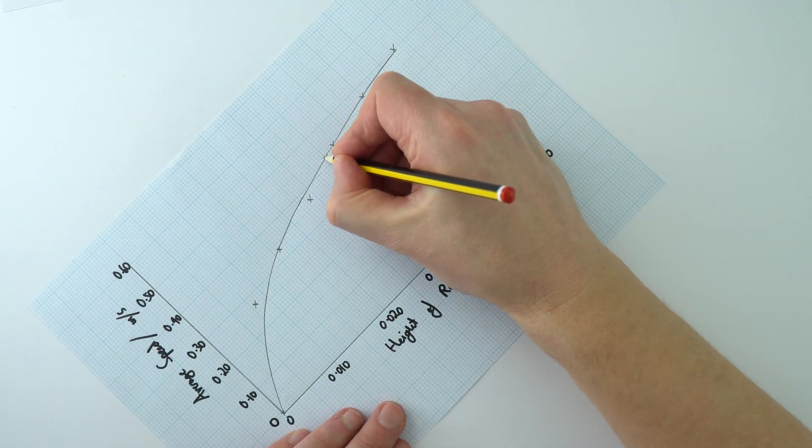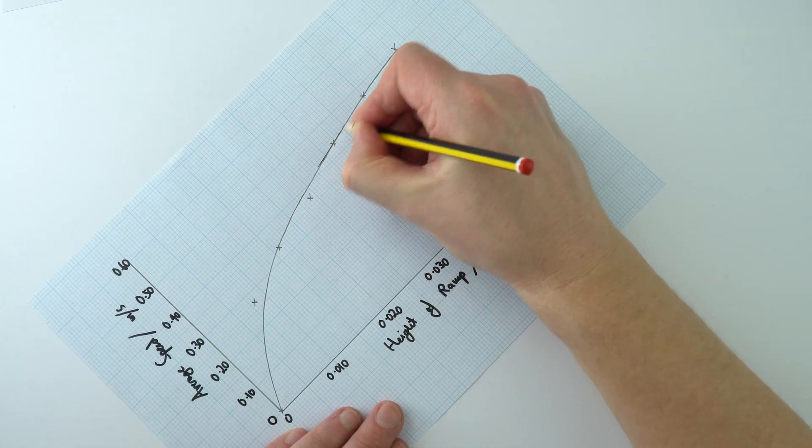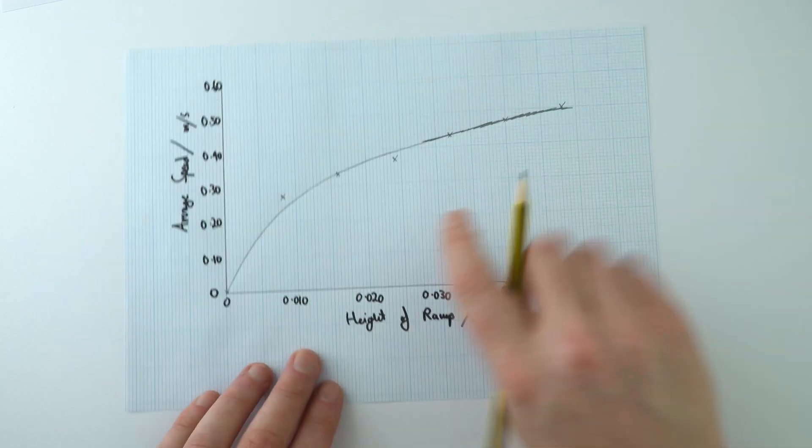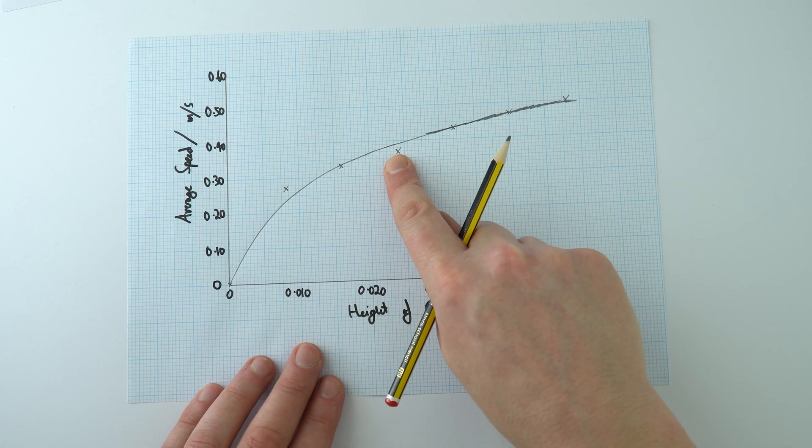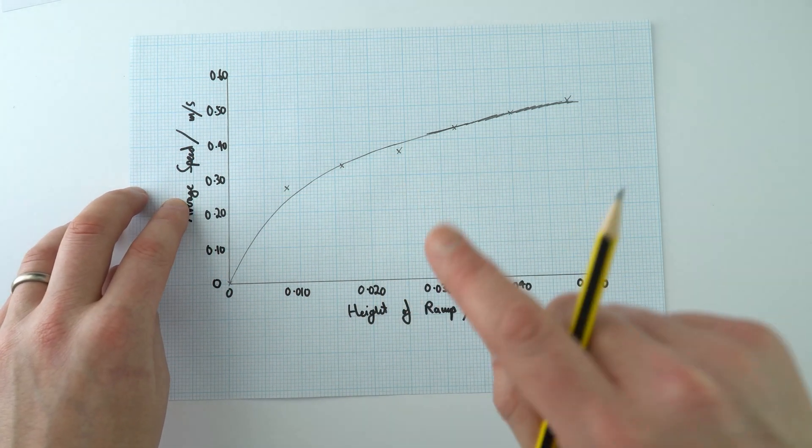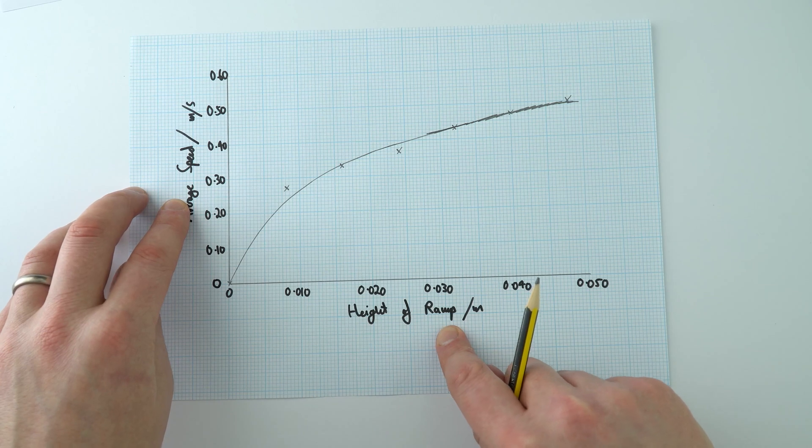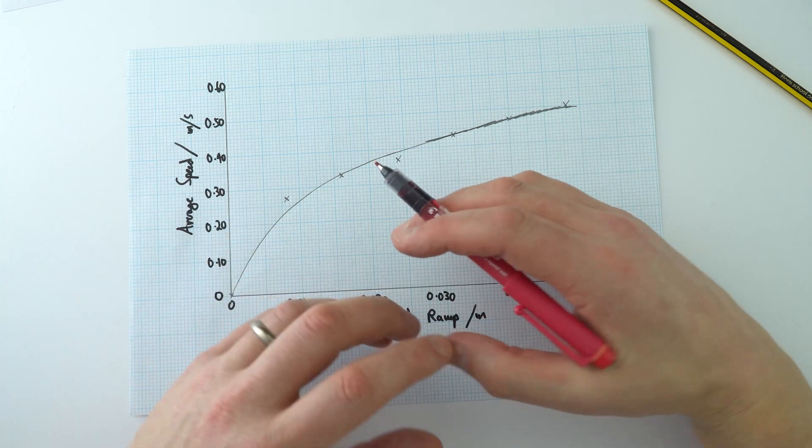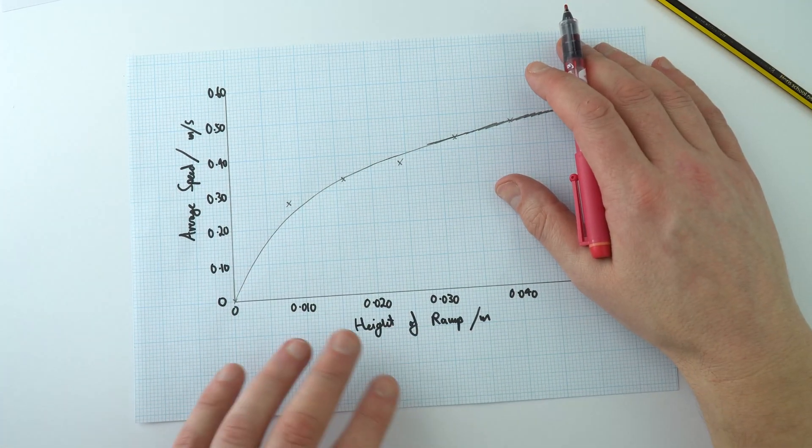With your lines of best fit you don't want it to be really heavy and you don't want to be shading it in with some sort of hairy line like that. This is the kind of thing we're after, and what it really shows here is that the average speed is not directly proportional to the height of the ramp because we don't have a straight line that goes through the origin. In actual fact we might be able to think about how this relates to some of the physics that we've learned.